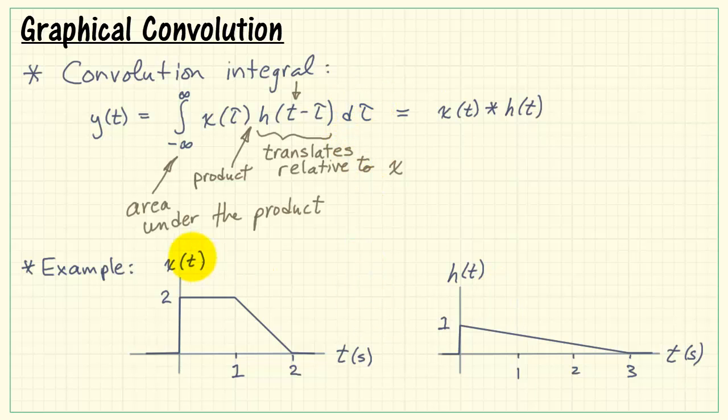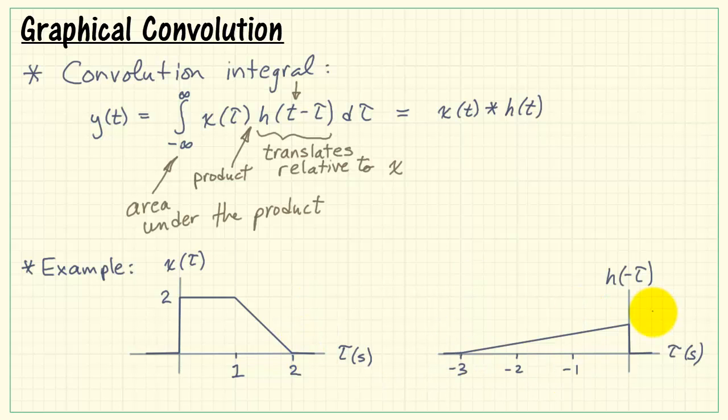Now, our dummy variable of integration can be used as an alternative name for all of our time axes on the pictures. So I'll begin by swapping out all the t variables for tau. Now, let's unpack this. First thing we have is the negative sign on tau. If I'm picturing h of tau, then h of minus tau is going to flip this around the vertical axis, just like that.